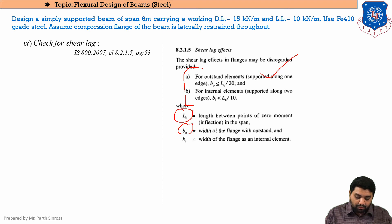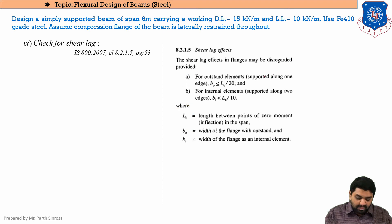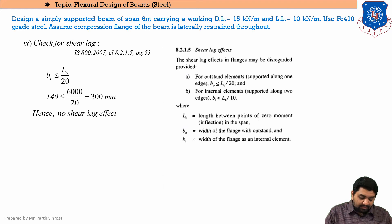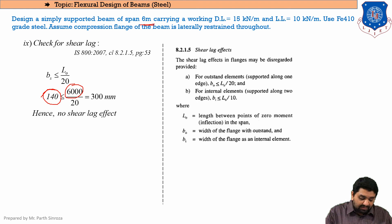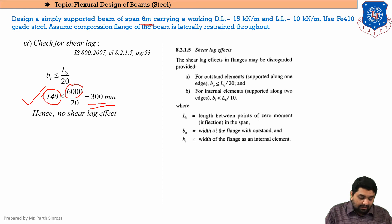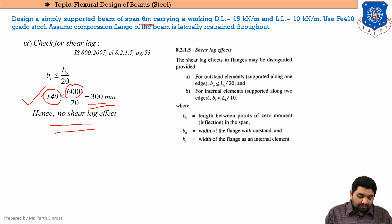For our beam: BO = 140 mm (half flange width) and L0 = 6000 mm (beam span). The right-hand side value L0/20 = 300 mm. Since 140 < 300, the condition is satisfied and there is no shear lag effect to be considered.